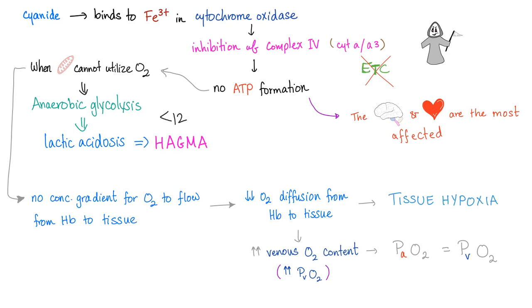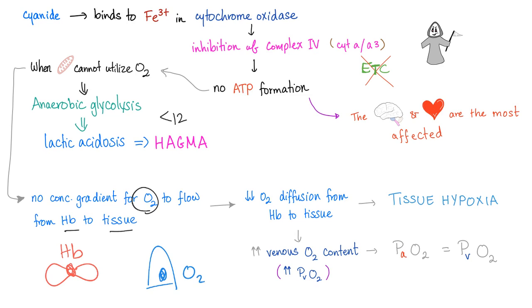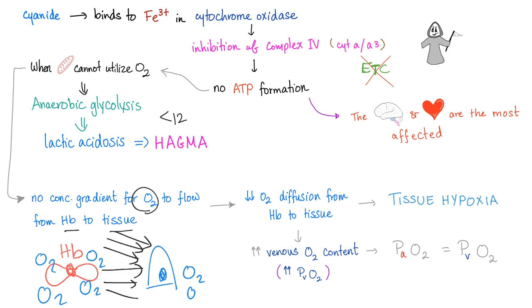When tissue uses lots of oxygen, the concentration of oxygen on hemoglobin is greater than in the tissue, which drives diffusion — oxygen flows down the concentration gradient from the red blood cell's hemoglobin into the tissue.